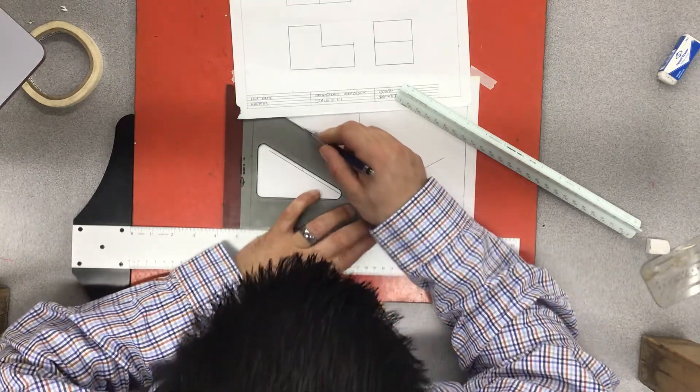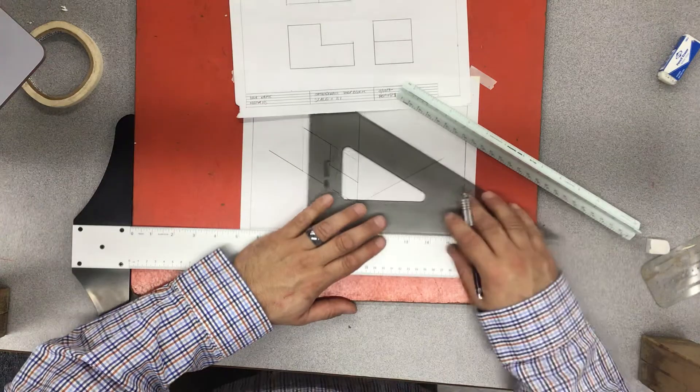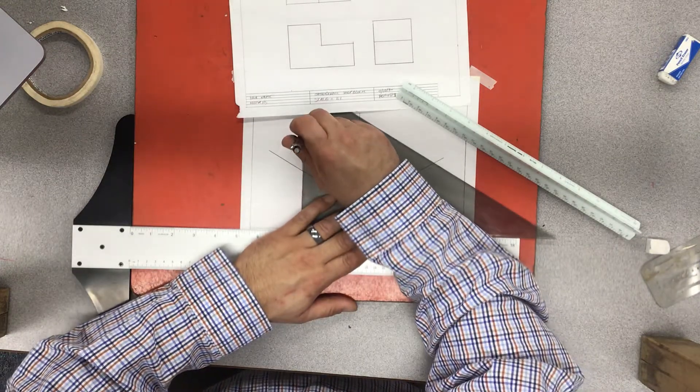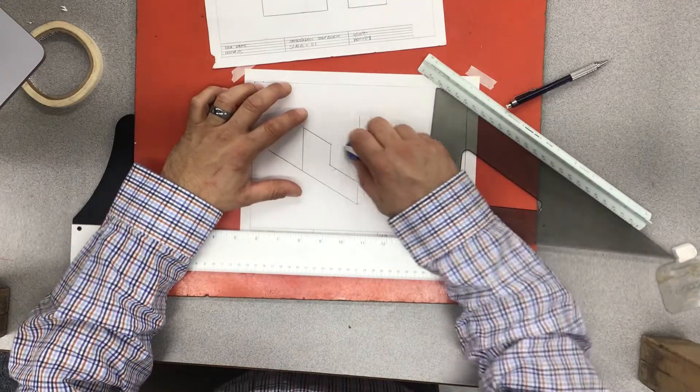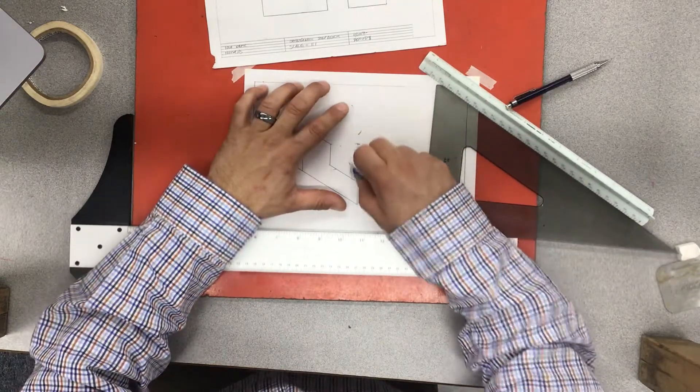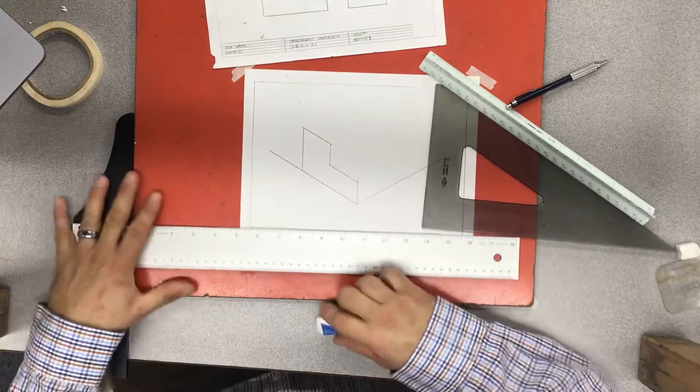I'll darken these two lines up now so it's a lot easier for you to see. Okay, now that's the L part of my step block.